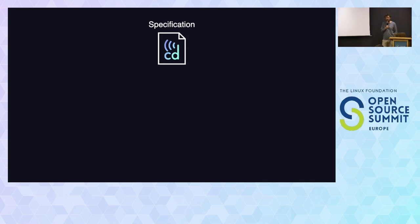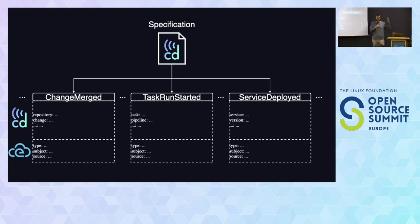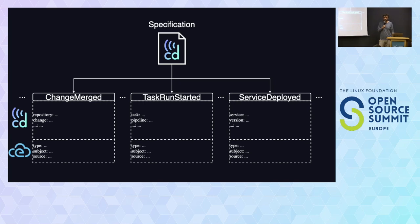In the specification, we define a number of events — they can be related to source code, pipelines, deployments, or other areas. For each event, we define the mandatory and optional parameters that senders might want to communicate and receivers might want to know. Since we build on top of Cloud Events, which is a CNCF project, we also provide guidelines for how to use the fields that Cloud Events provides.